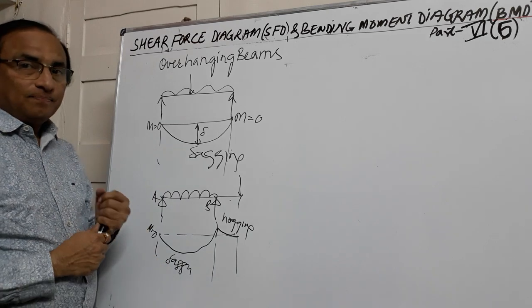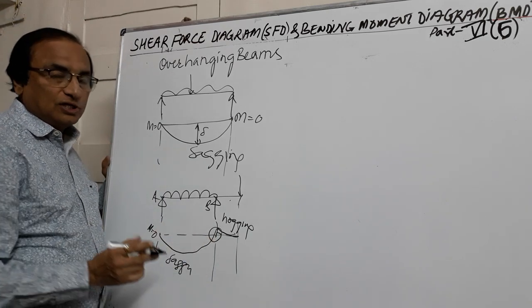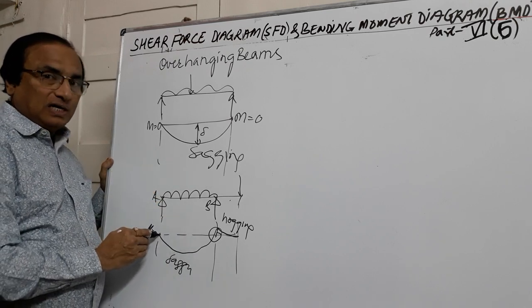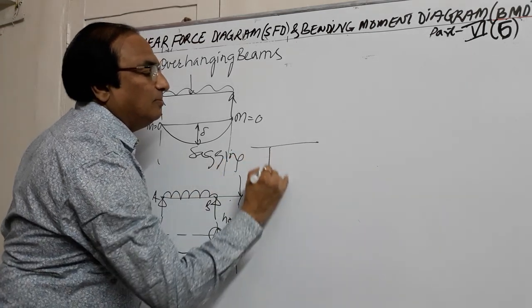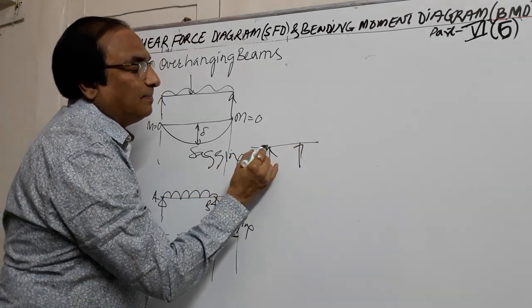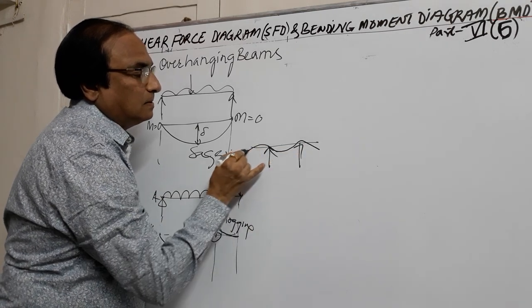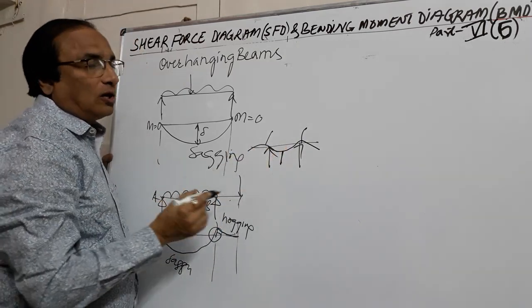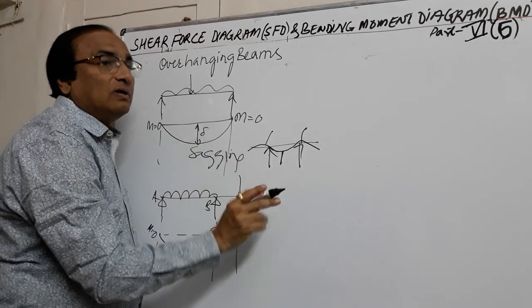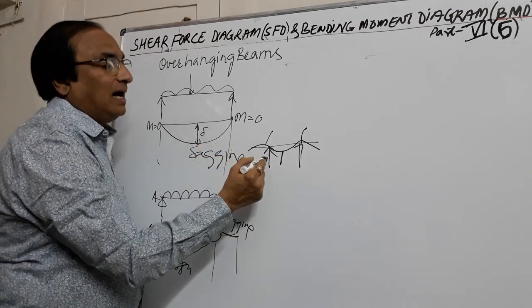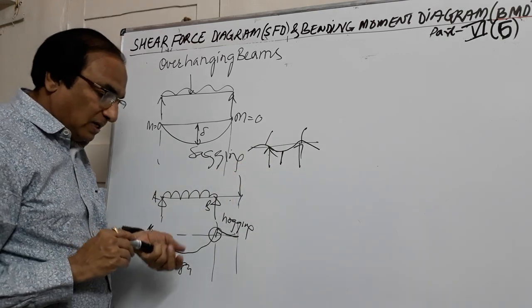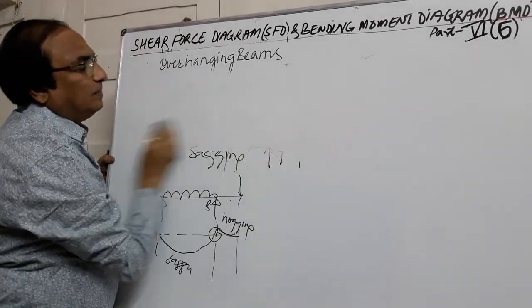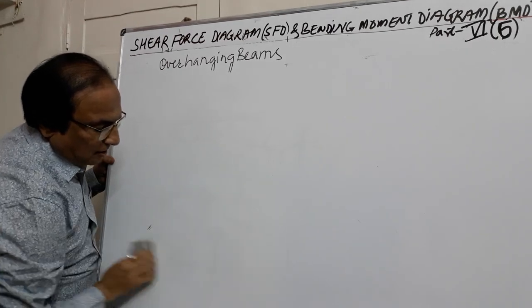In the case of an overhanging beam, the moment at the overhanging portion is not zero — it is always negative, what we call the hogging bending moment. If it is simply supported, moment will be zero. Suppose if I take a beam overhanging on both sides, then the bending pattern will show hogging at both supports. In this case, at both supports the moment will not be zero — the moment will be negative bending moment. At the overhanging part, there will be a negative bending moment acting.